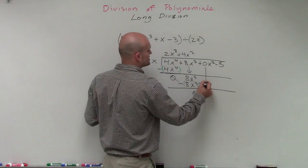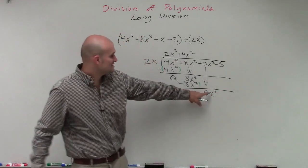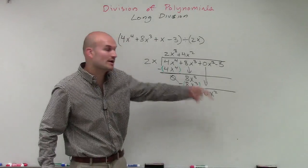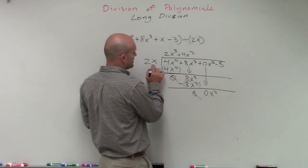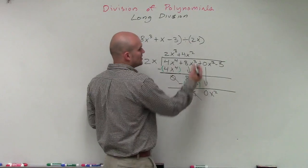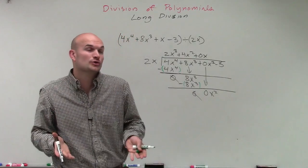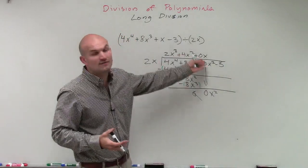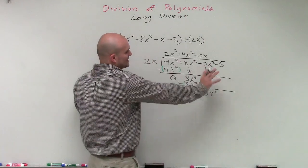Then I bring down the next term, which is a 0x squared. 2x does not divide into 0x squared. But the 2 does not divide into 0. And the x does divide into the x squared. So you can say that this place value is going to be a positive 0x. So we're not going to include a linear term in part of our divisor. But we'll put it with the 0 just so we have the place value in our descending order.